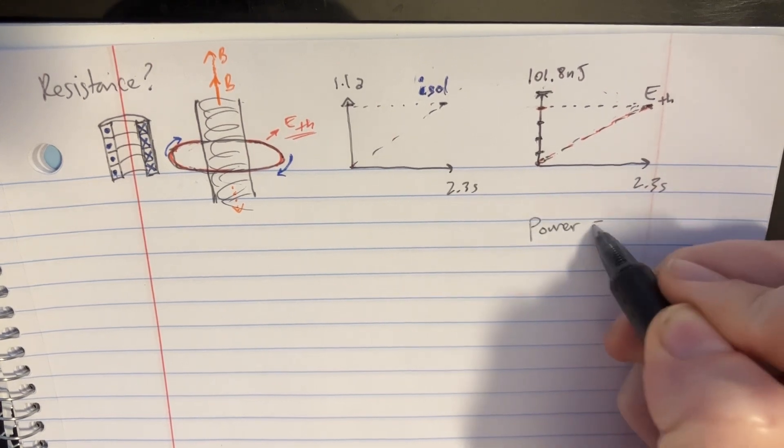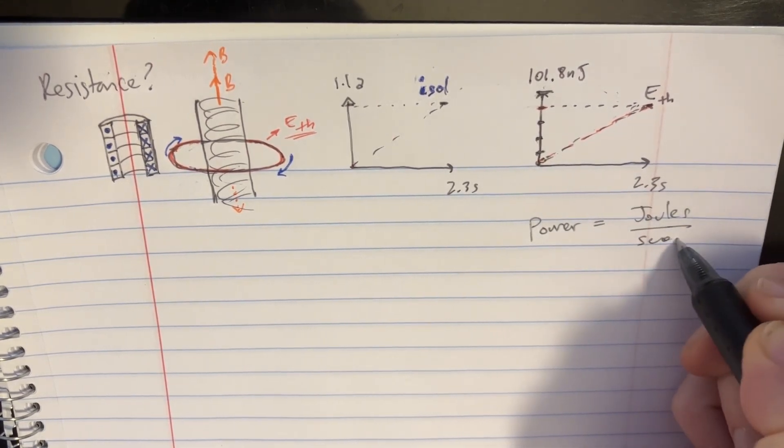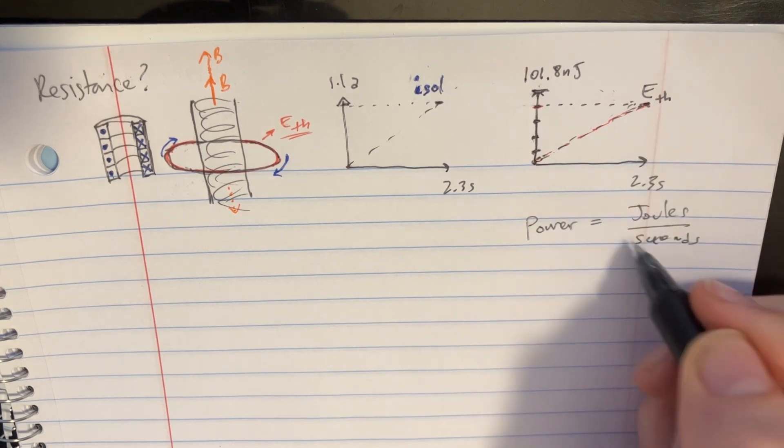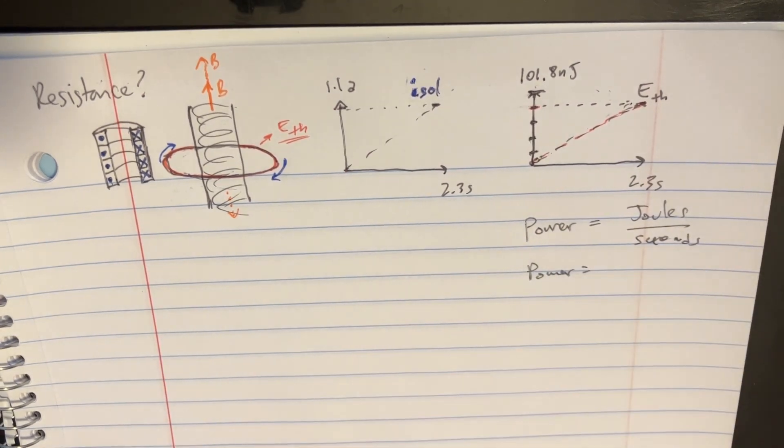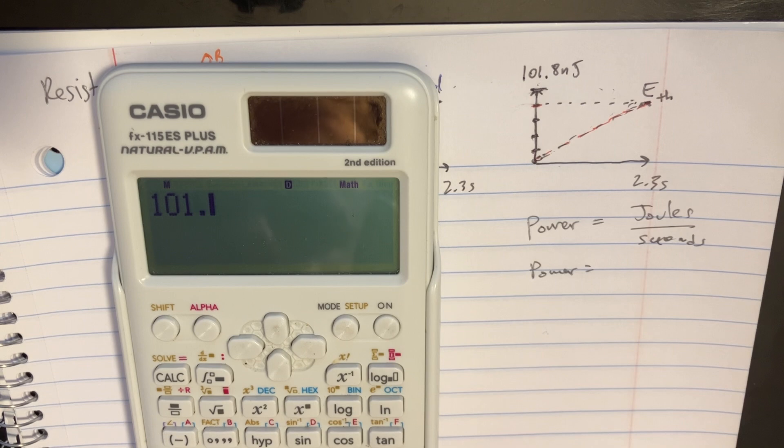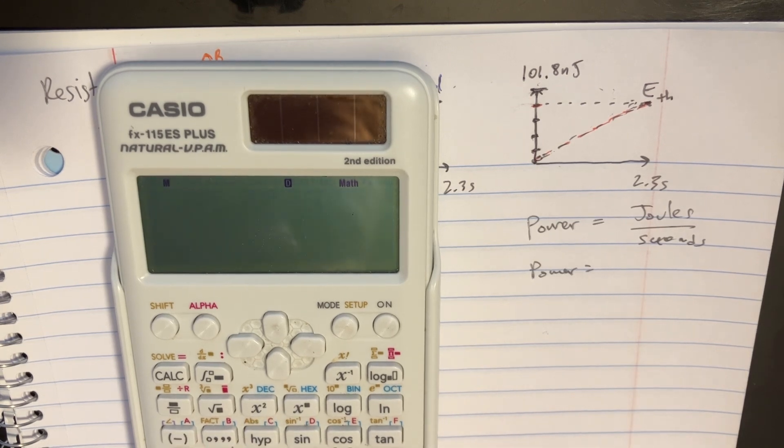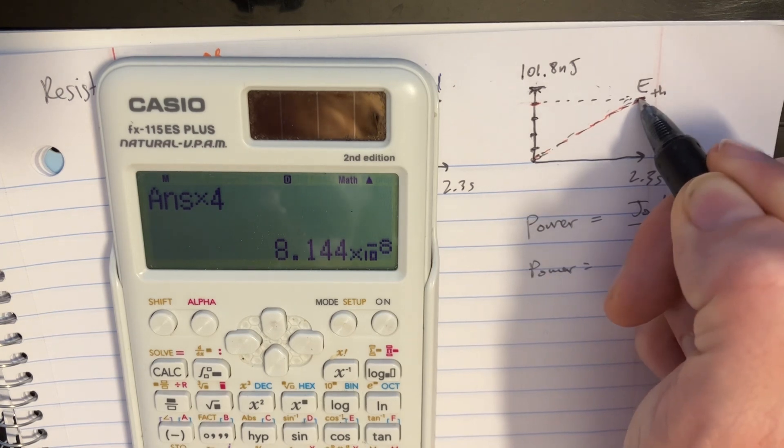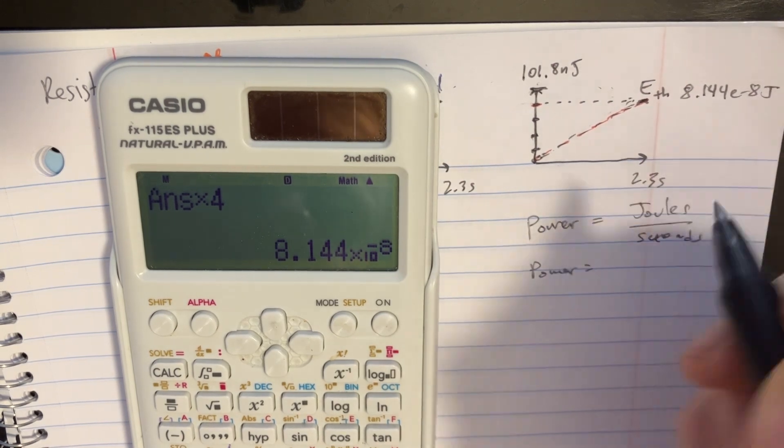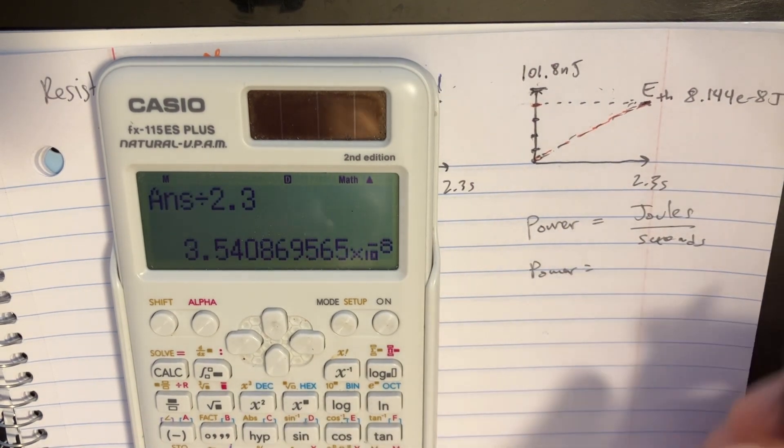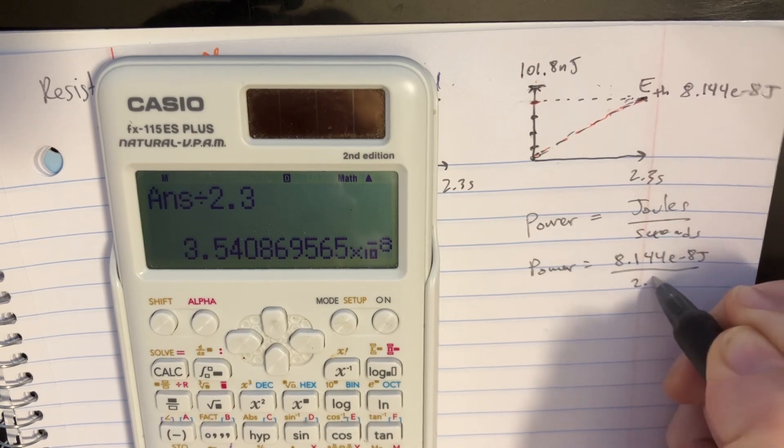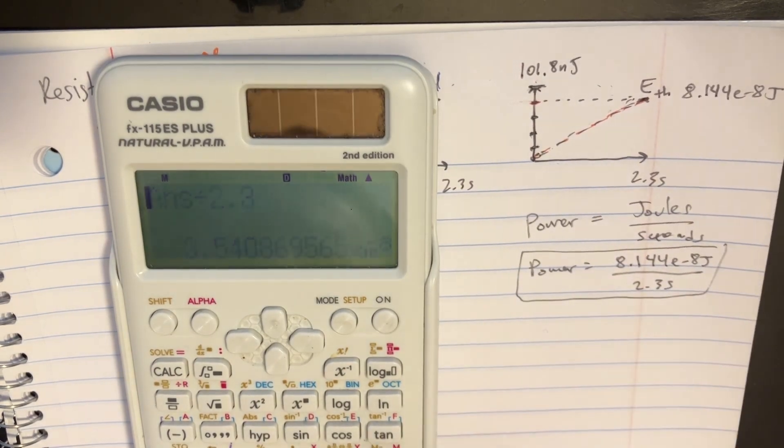We should also remember that we have this equation called power is joules over seconds, and so that's essentially what we're getting here. Let's go ahead and figure out what this power is equal to. We have to divide this out because this is one, two, three, four notches out of five. So we'd have 101.8 nanojoules divided by five and then multiply that by four. That's how much we get there - we're at 8.144 e to negative eight joules. Then we're going to divide that by 2.3 seconds.